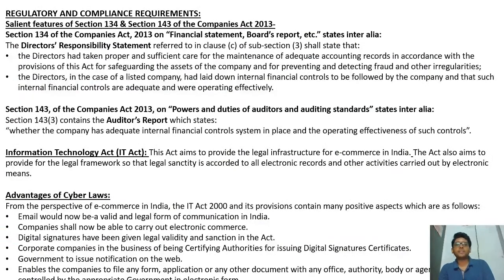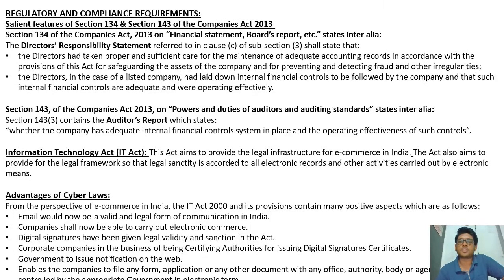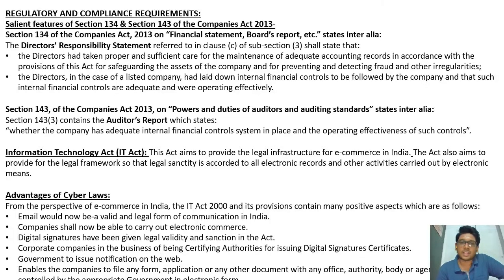Regarding regulatory and compliance requirements, Section 134 of the Companies Act 2013 covers financial statements and board reports. It states that directors must have taken proper and sufficient care for maintenance of adequate accounting records in accordance with the Act, for safeguarding the assets of the company and preventing and detecting fraud. It also states that directors of listed companies must have laid down internal financial controls that are adequate and operating efficiently.